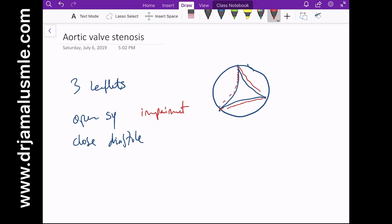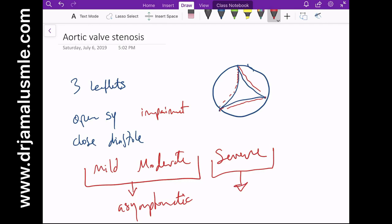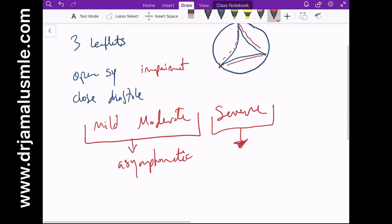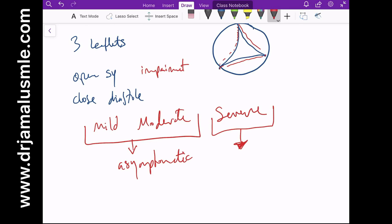This stenosis can be graded as mild, moderate, or severe. Mild and moderate are usually asymptomatic and we don't usually do anything to those severities, while severe aortic stenosis is when the patient would come in with certain symptoms and then you will have to act on it.